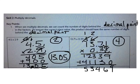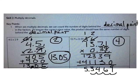Now I can add my partial products. When I do that, I get 53,469. Where should I place the decimal point in my answer? I should place it between the 5 and the 3. I need 1, 2, 3, 4 digits behind the decimal.